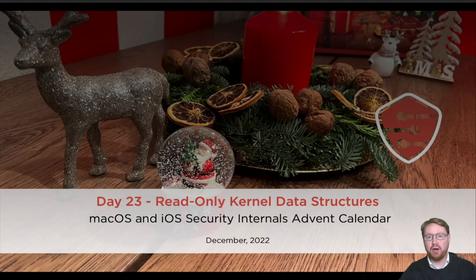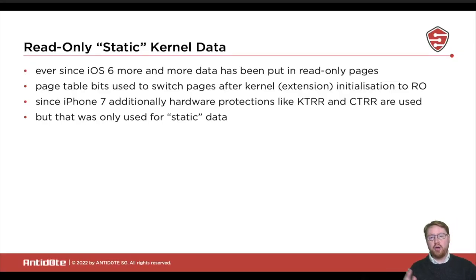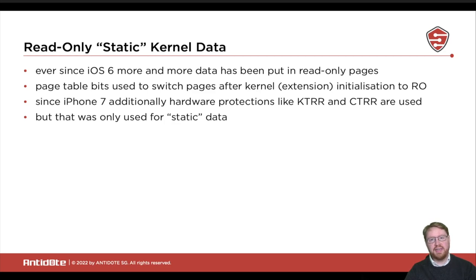Welcome to Day 23 of the macOS and iOS Security Internals Advent Calendar. Today we will be looking into read-only kernel data structures. Ever since the release of iOS 6, Apple has started to move vital kernel data into read-only pages. This was done to protect certain data from being overwritten by simple kernel read-write primitives — basically to make kernel exploitation harder.